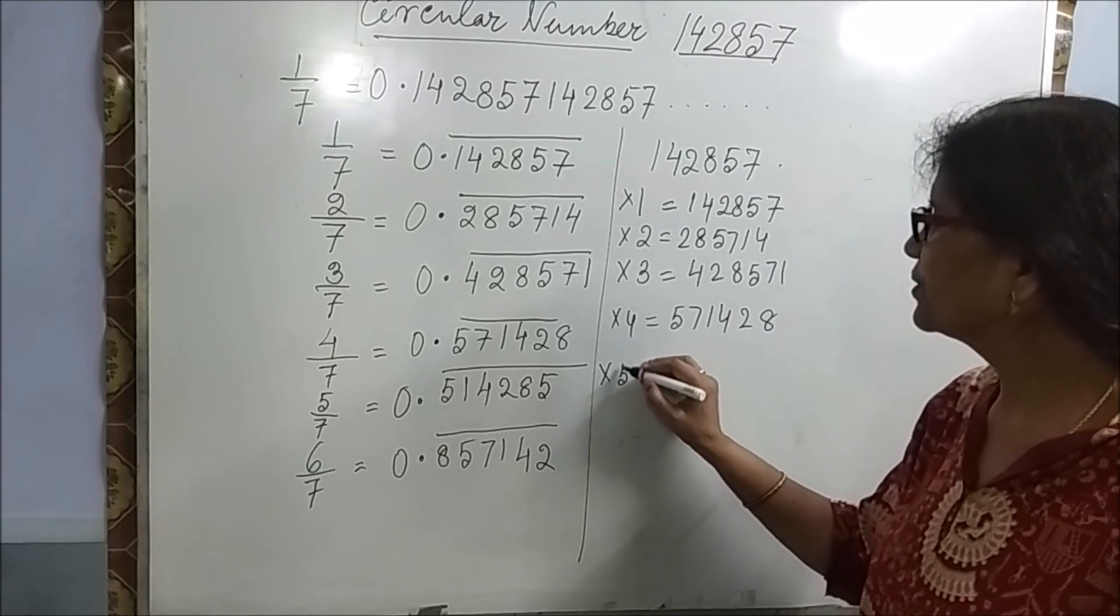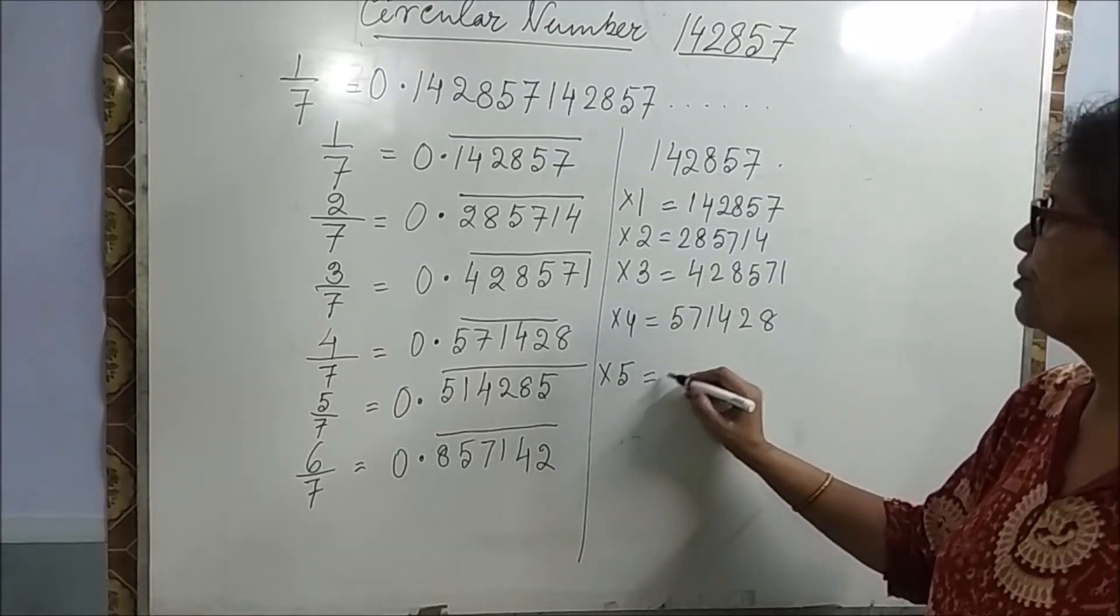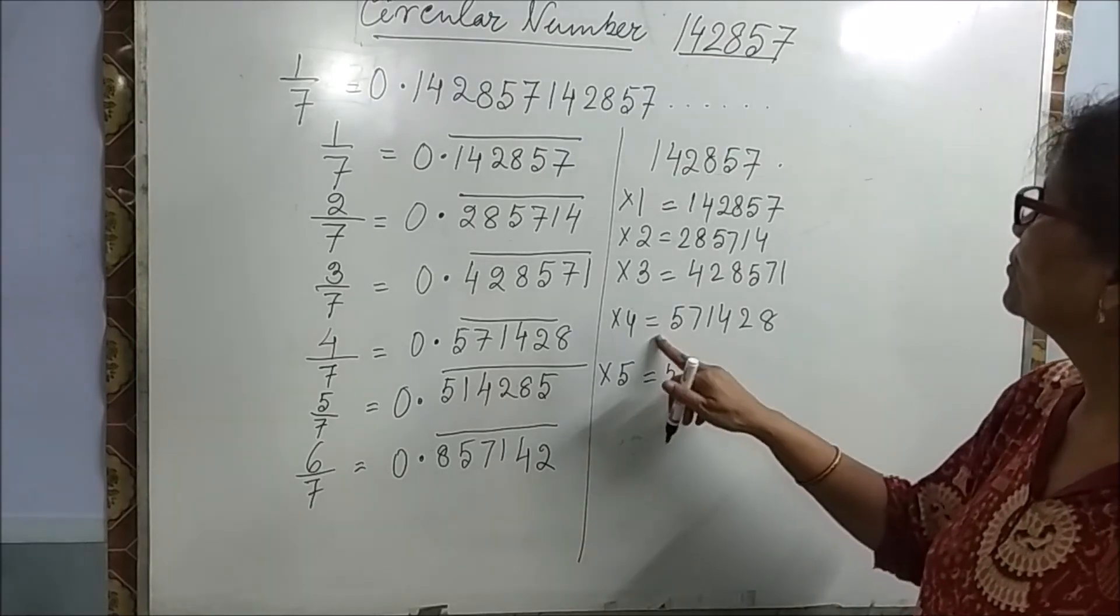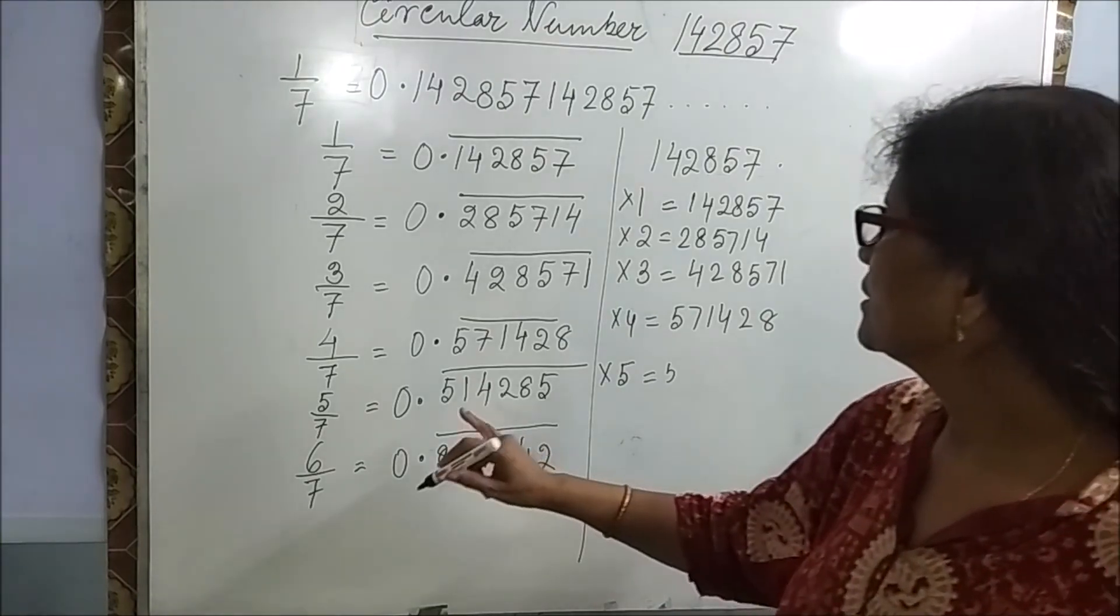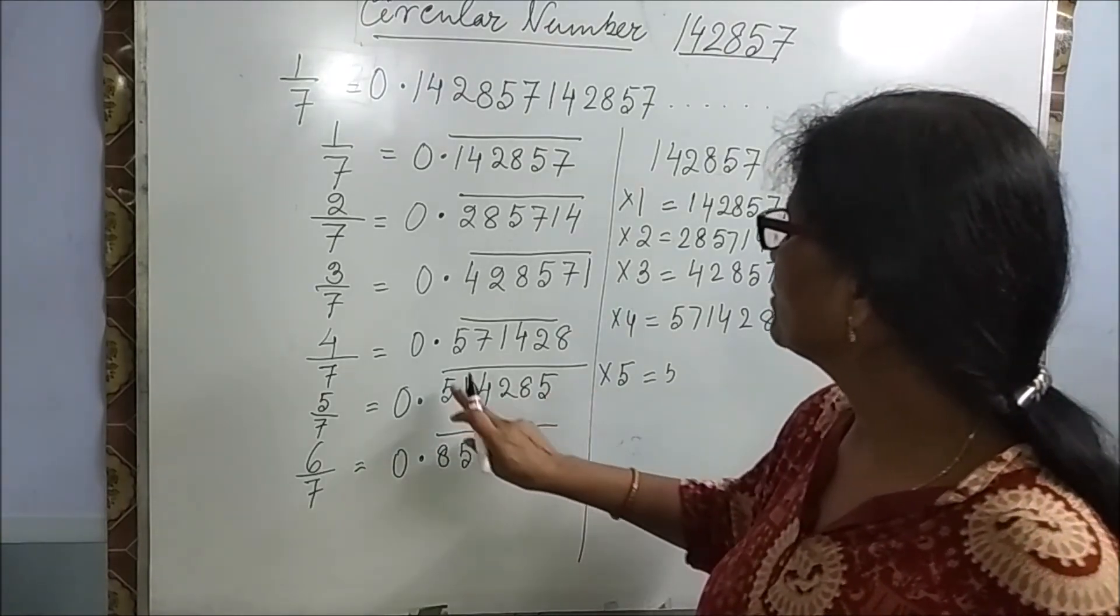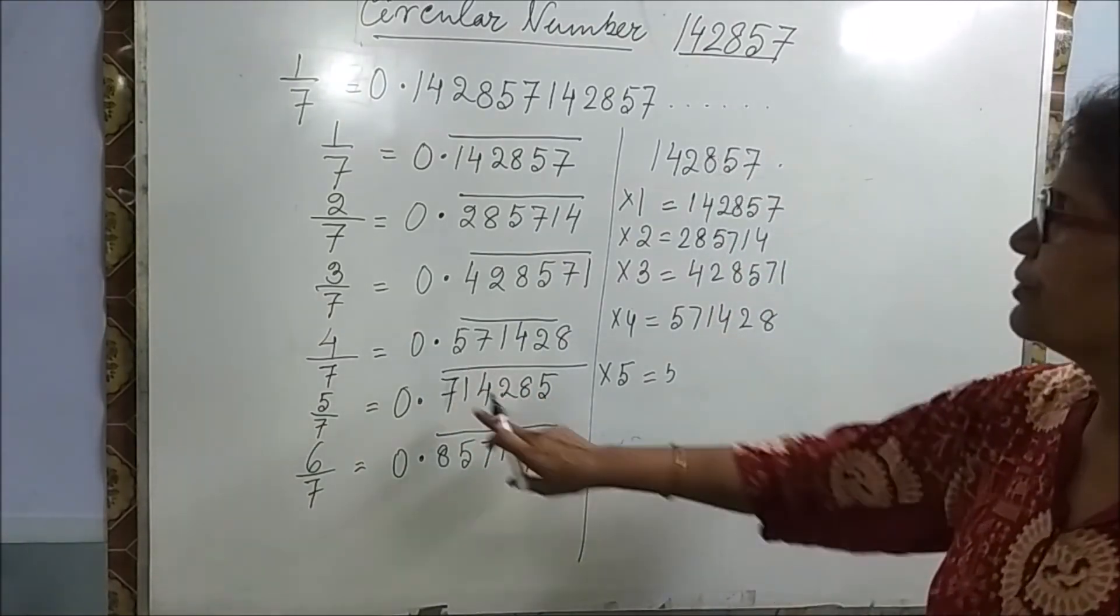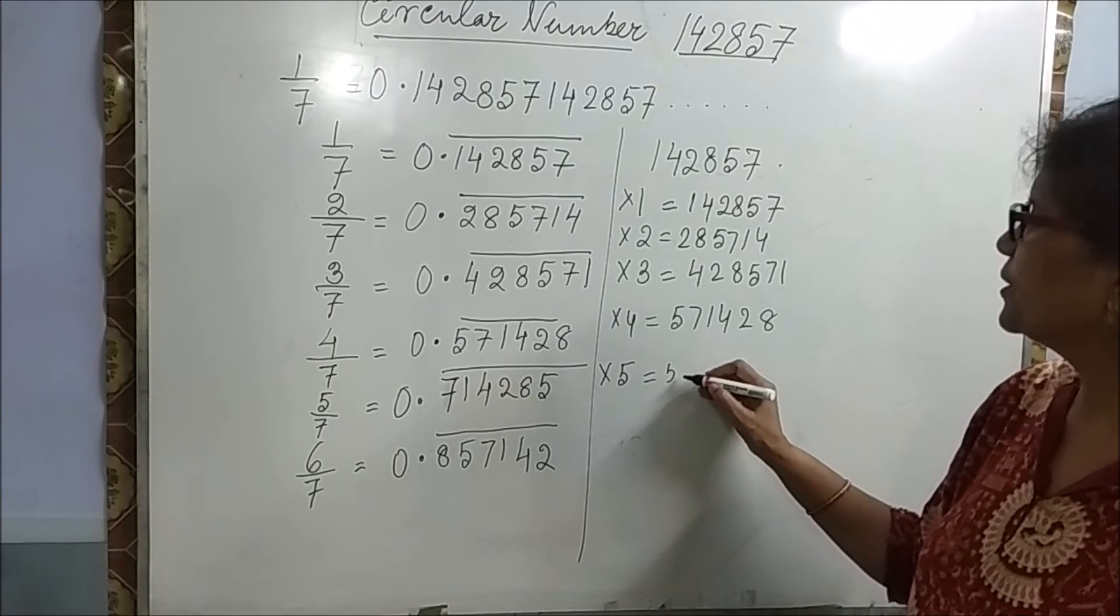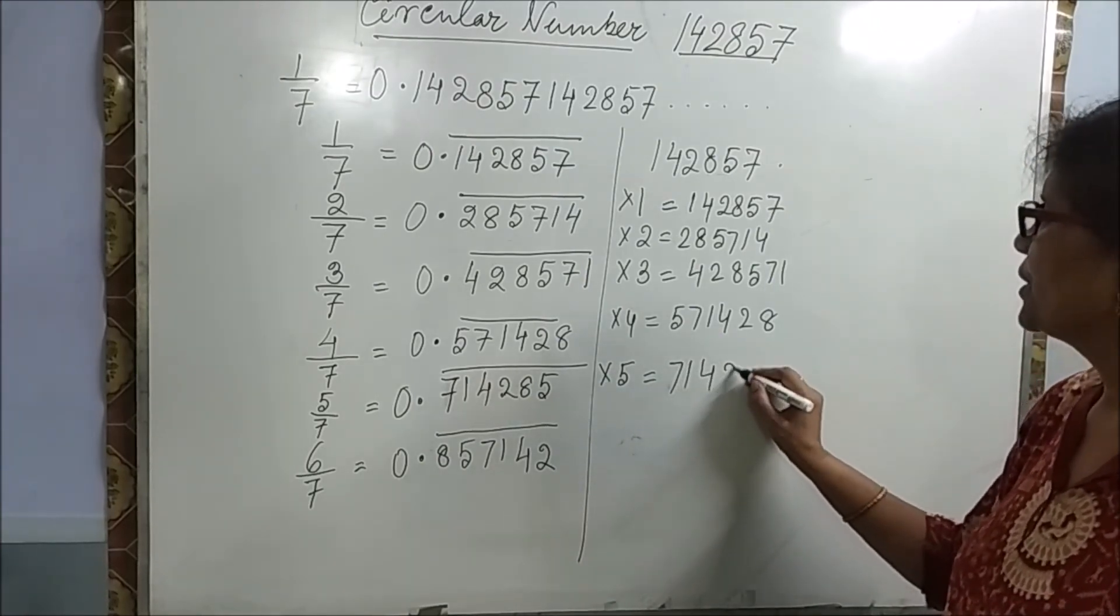Multiply by 5 you will get? This 5 by 7 is wrong. 5 by 7 will be 7, 1. Sorry. Very sorry. It will be 7, 1, 4, 2, 8, 5.